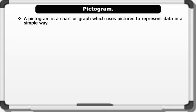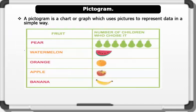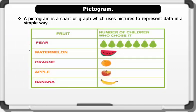Pictograms. A pictogram is a chart or graph which uses pictures to represent data in a simple way. Below is a pictogram representation of data. The pictogram is also called a pictograph.